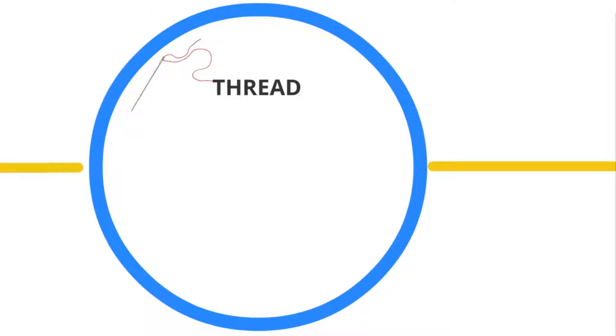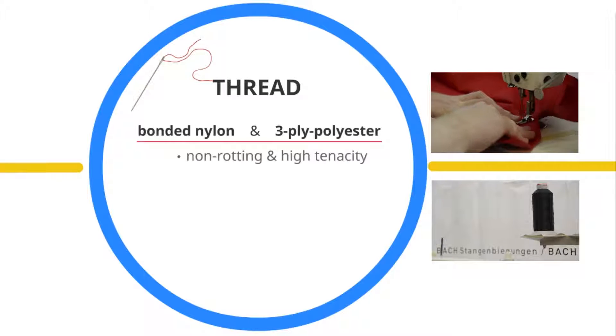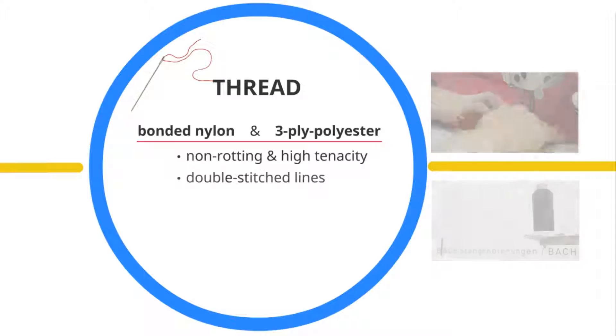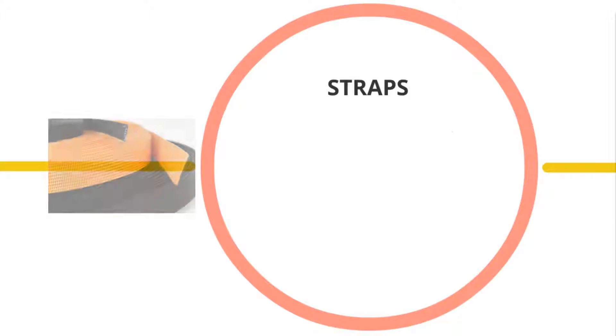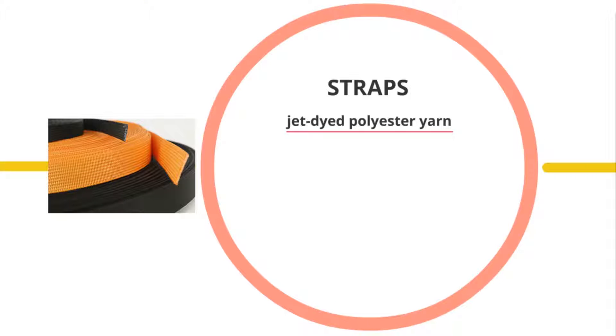At Bach we use bonded nylon and 3-ply polyester, which is non-rotting and comes with high tenacity. In addition to that the lines are double stitched. All this contributes a lot to our long-lasting packs.